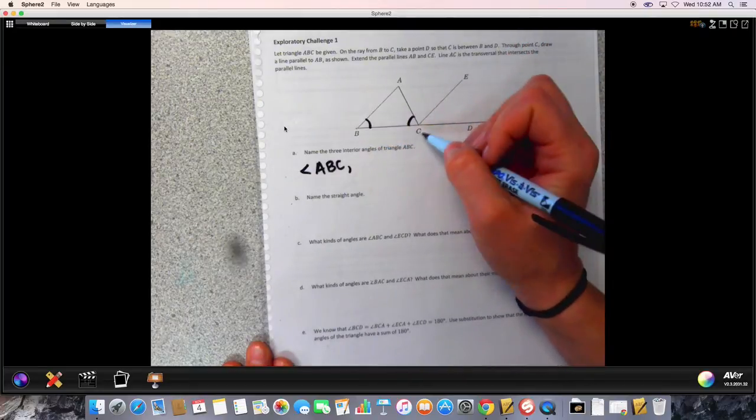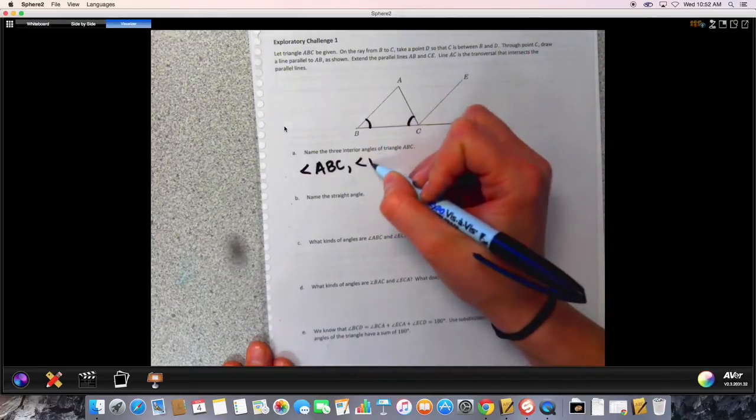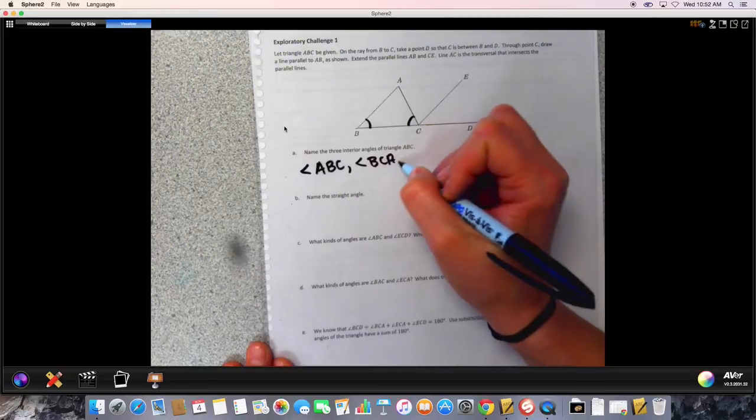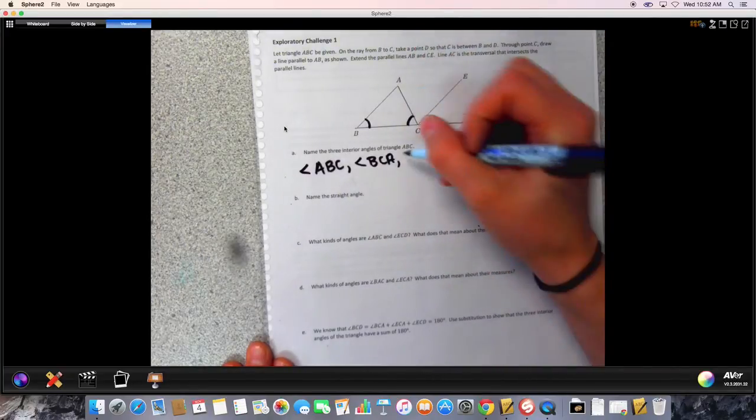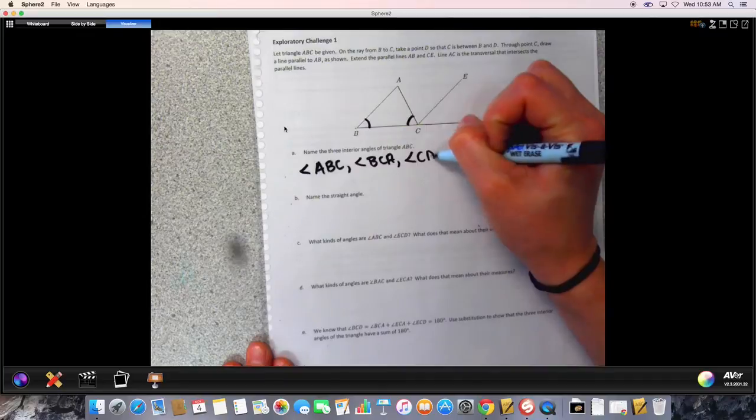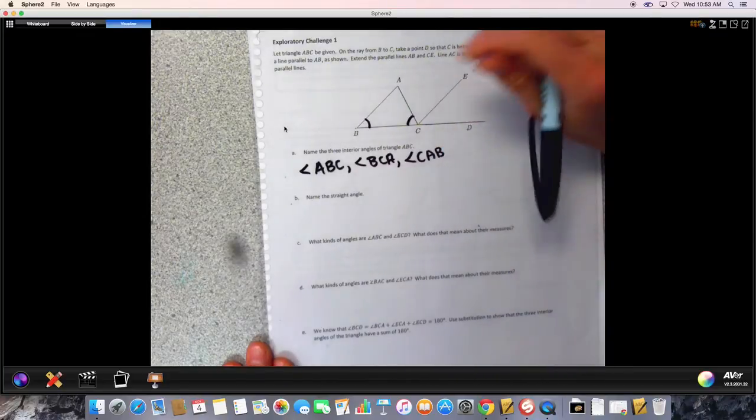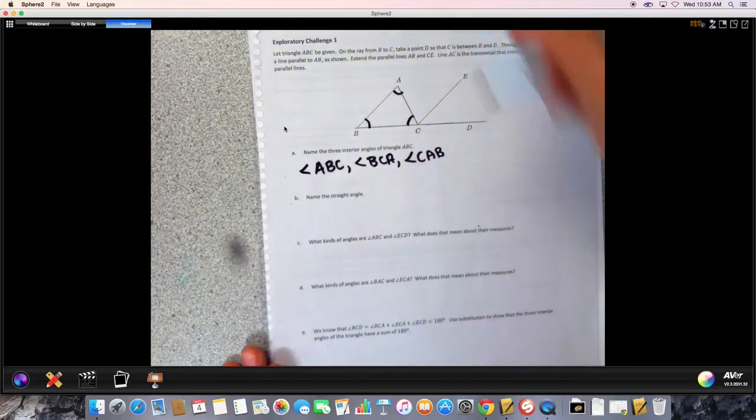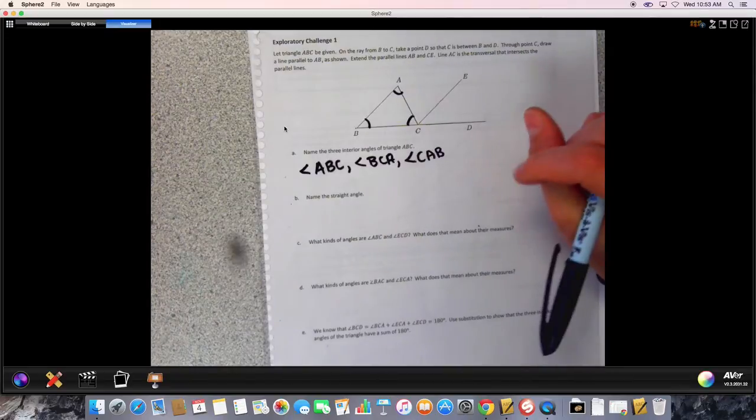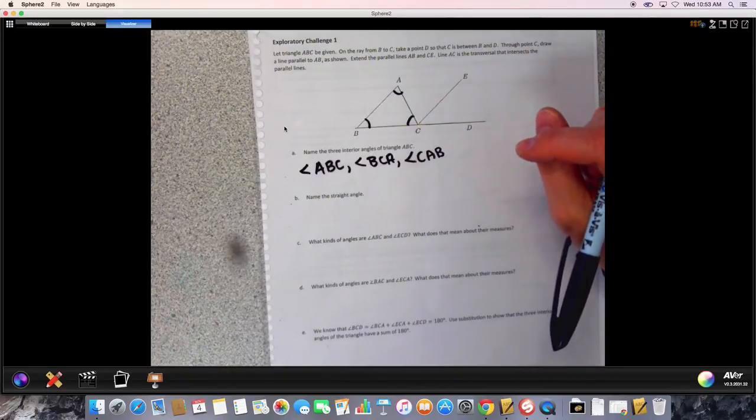This angle right here then would be angle BCA, and finally we have angle CAB right here. Those are our three interior angles of our triangle.